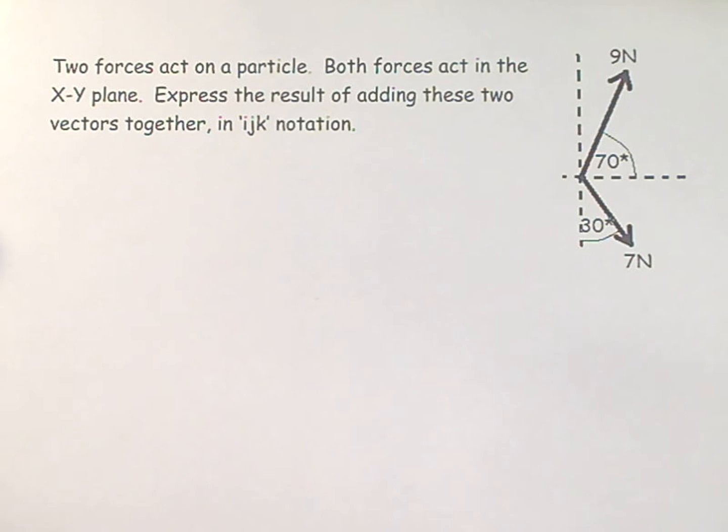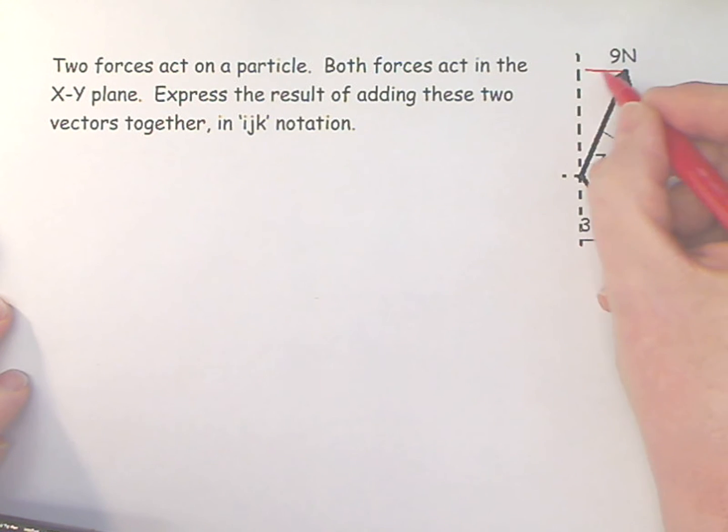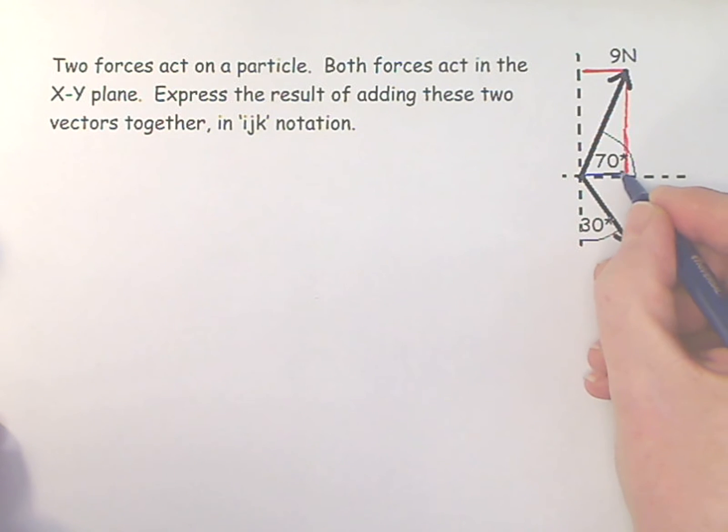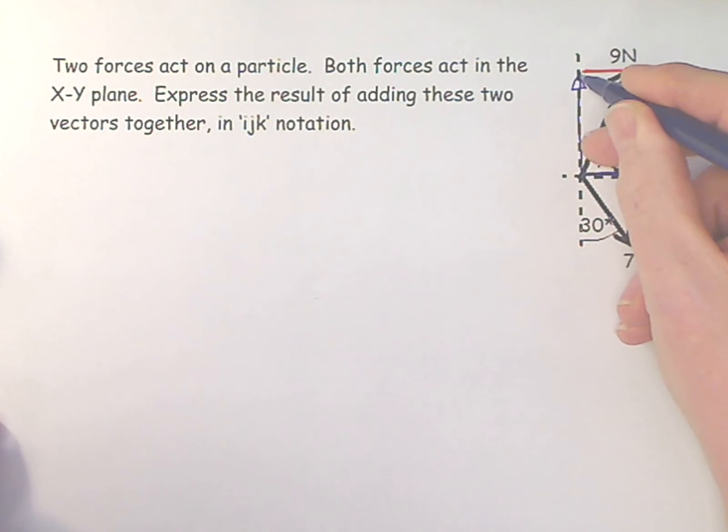Let's start by visualizing our vectors and their components. The first thing I'm going to do is imagine projecting these two lines to the side. Remember that the x-component and the y-component are smaller than the original vector. The original vector is always the hypotenuse. So we have one component horizontally and one component vertically.